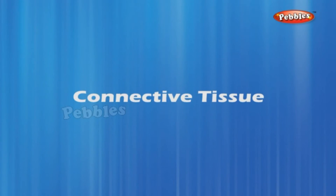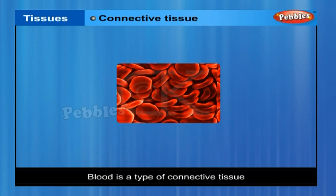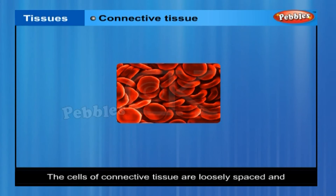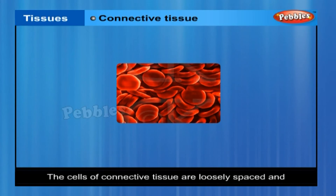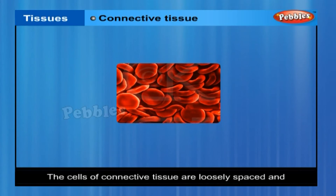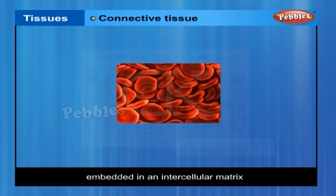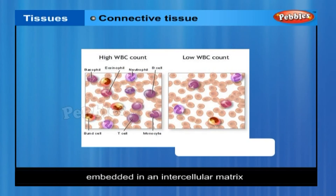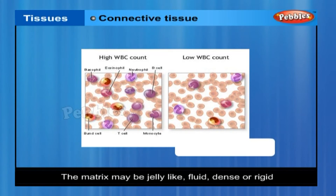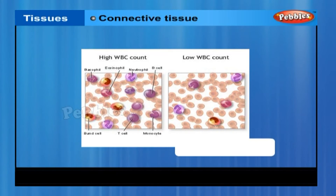Connective tissue. Blood is a type of connective tissue. The cells of connective tissue are loosely spaced and embedded in an intercellular matrix. The matrix may be jelly-like, fluid, dense or rigid. The nature of matrix differs in accordance with the function of the particular connective tissue.